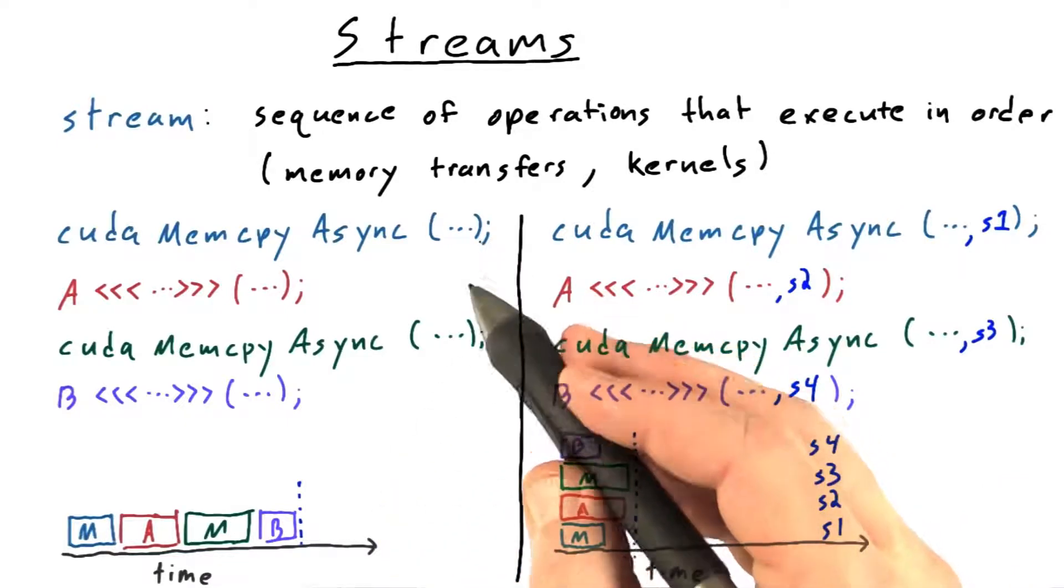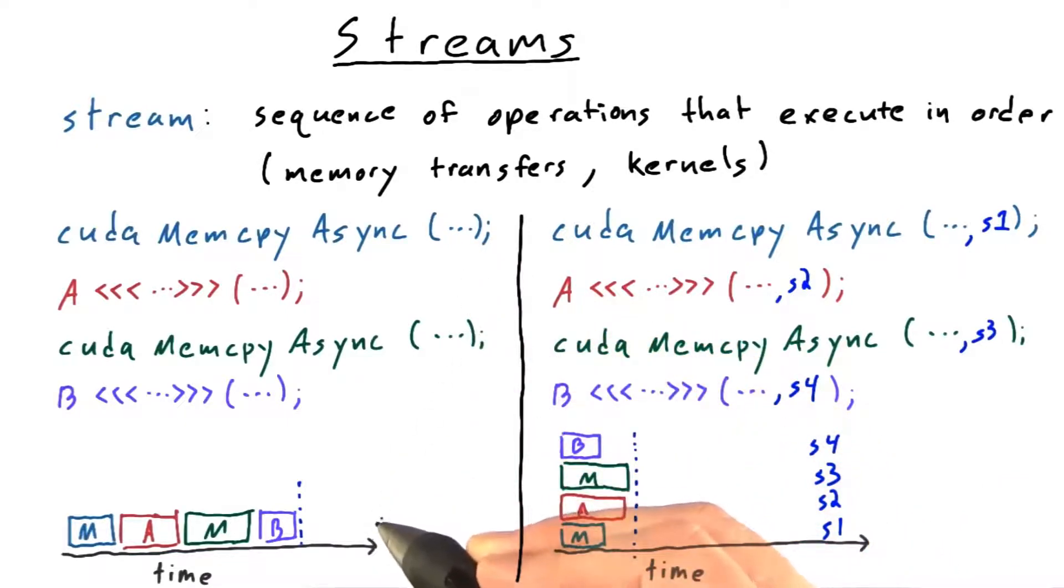Since we didn't specify a stream for any of these, we would say that they are in the default stream, which happens to be stream 0.